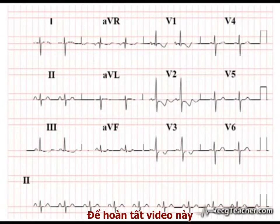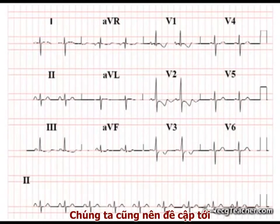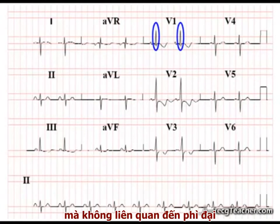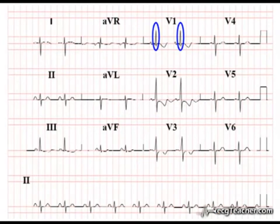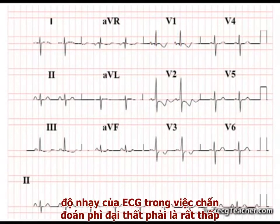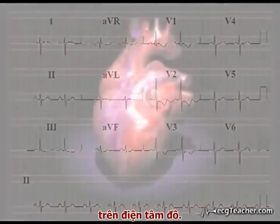To complete our brief discussion of the ECG changes associated with RVH, it is worth mentioning that although there are other causes of a dominant R wave in lead V1 unrelated to hypertrophy, the V1 R wave voltage criteria we've just applied to this ECG have reasonable specificity. However, as for LVH, the sensitivity of the ECG in the diagnosis of RVH is poor. In fact, it is only possible to diagnose about one-fifth of RVH cases from ECG changes alone.